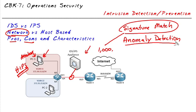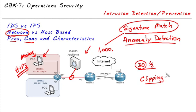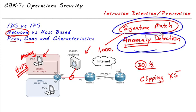Another method is anomaly detection, which can involve building a baseline of what normal traffic looks like. For example, we might normally have 30 half-formed TCP sessions at any given time. With anomaly detection, we build that baseline and set clipping levels — if sessions jump to five times the baseline, the system generates an alert because it's a statistical anomaly. Another type of anomaly detection is based on how protocols are supposed to work: behavior that deviates from normal TCP/IP operation can also trigger an alert. These are the two major categories for identifying good versus bad packets.